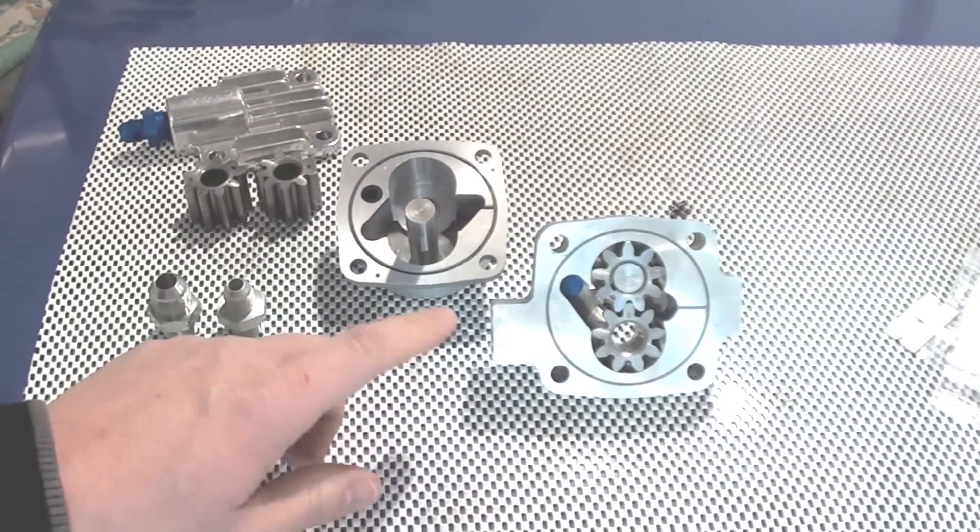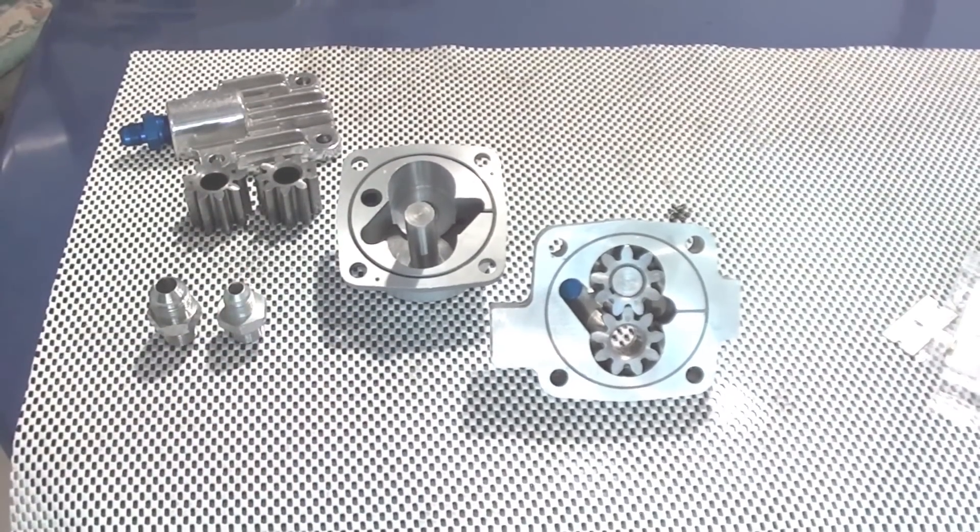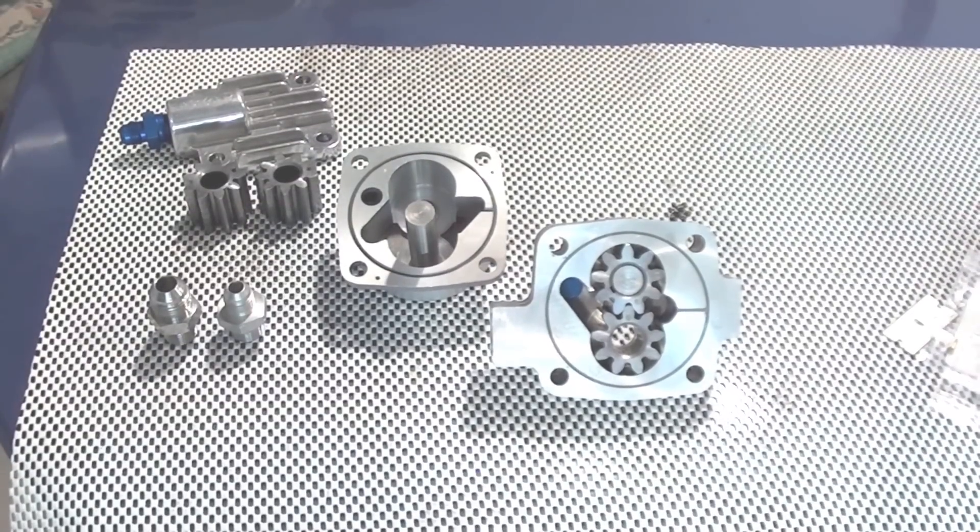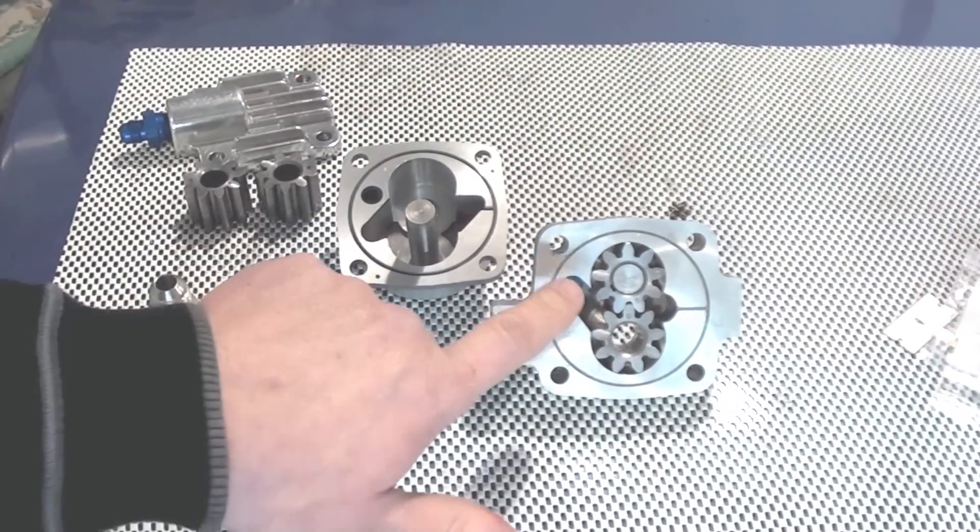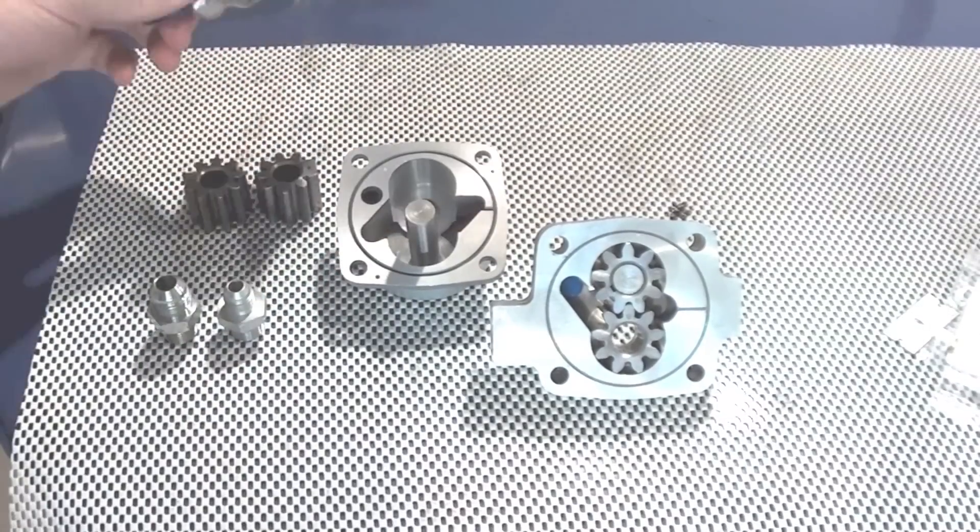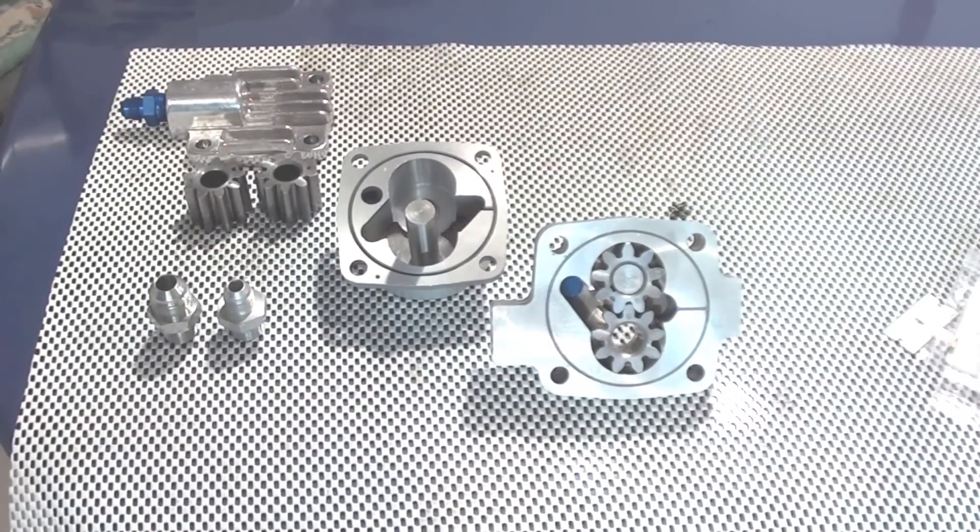To convert this pump to be used as a scavenge pump, whether you're scavenging from heads or from a turbocharger, is actually pretty simple. It requires the insertion of a pipe plug and then the use of a full flow cover on the front of it as well.